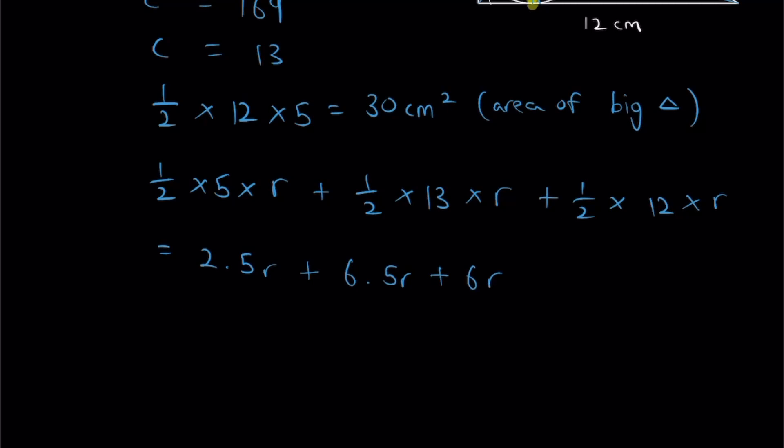That equals 30 cm², which means what is r? r is 30 divided by 15, and that's going to give me 2 cm.